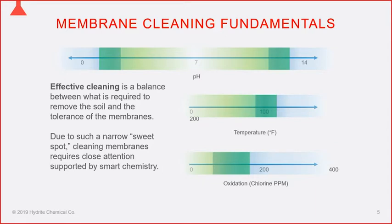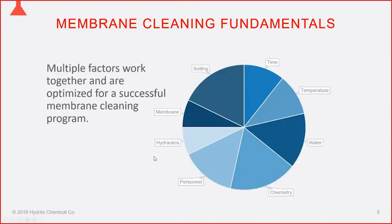We have to build a program that can handle day-to-day upsets or variations, and we'll talk about different types of chemistry and different philosophies of cleaning — commodity versus built products. To develop an effective cleaning program for membranes, we generally look at eight different factors. We don't just pull chemicals off the shelf; we have to consider the membranes being cleaned, because that dictates what type of chemistry we can use.